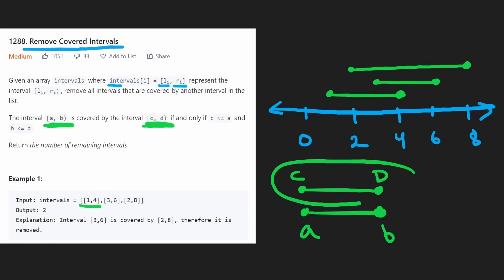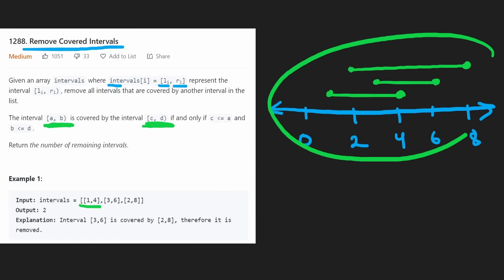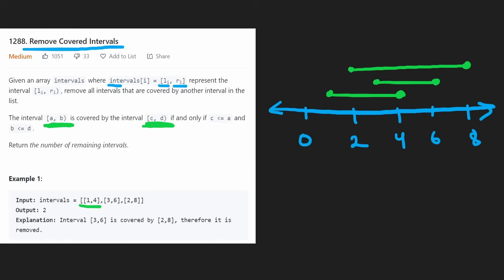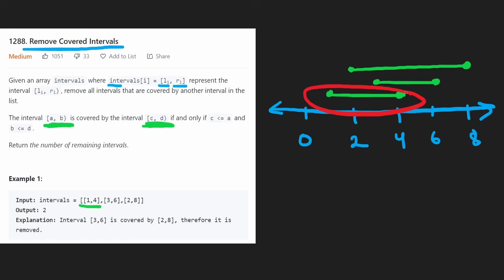So it's pretty intuitive what covering means. Since we're given a list of intervals, the brute force would be to look at every single interval. Let's look at this one — is it being covered? We'd iterate through the remaining intervals in the list: is this interval covering this one? Nope. Is this interval covering this one? Nope. So this interval is not being covered.